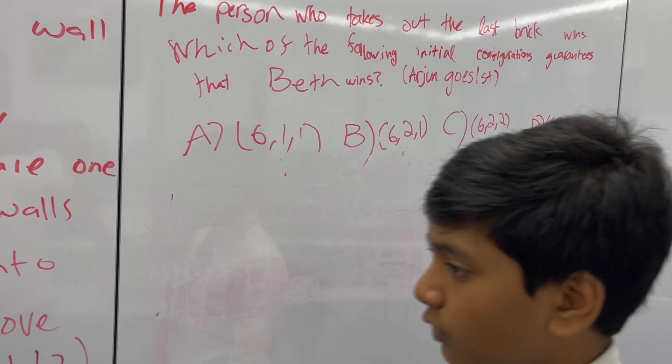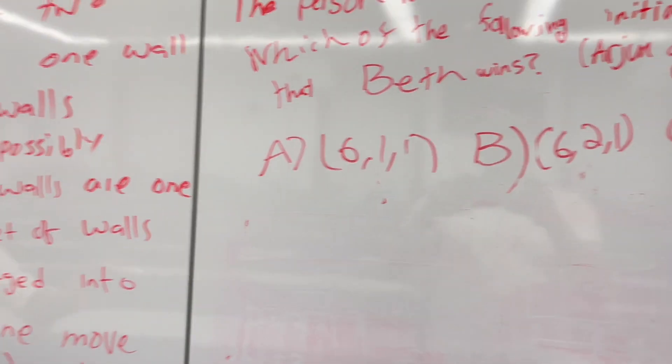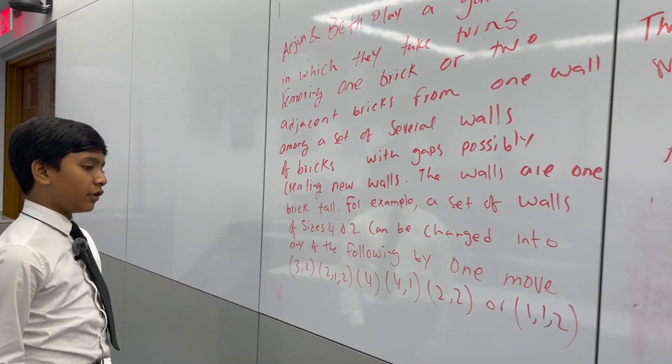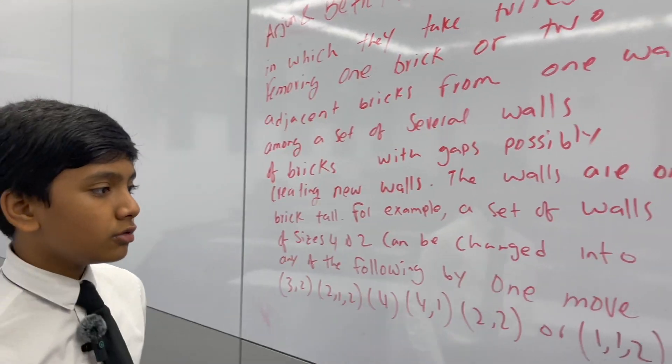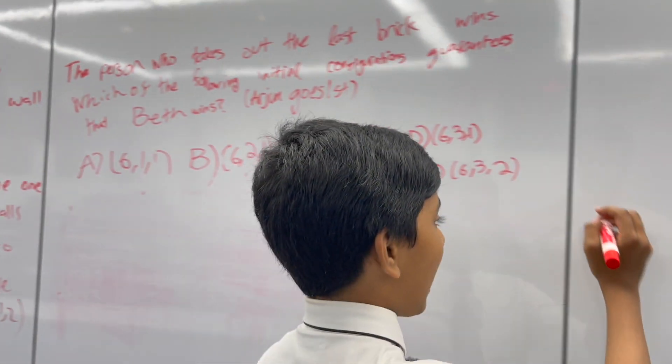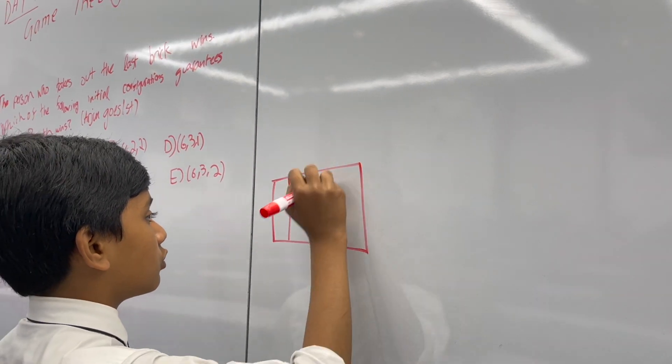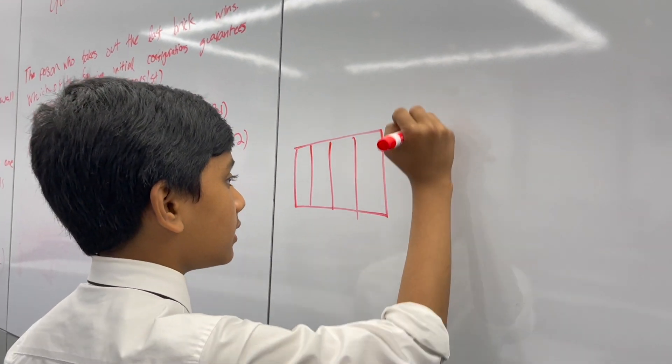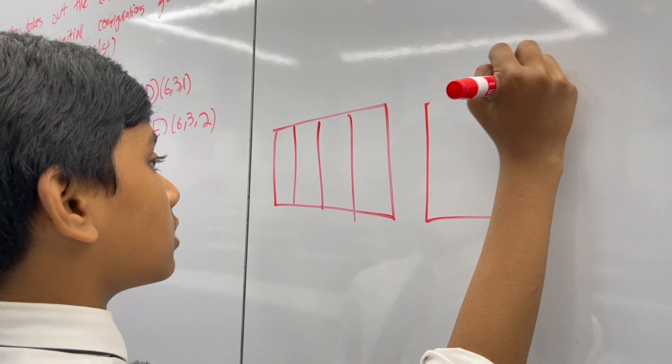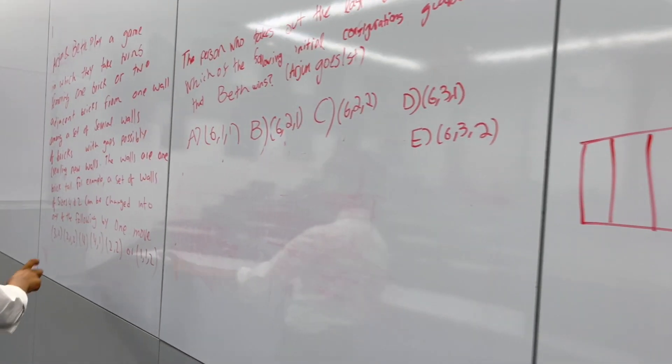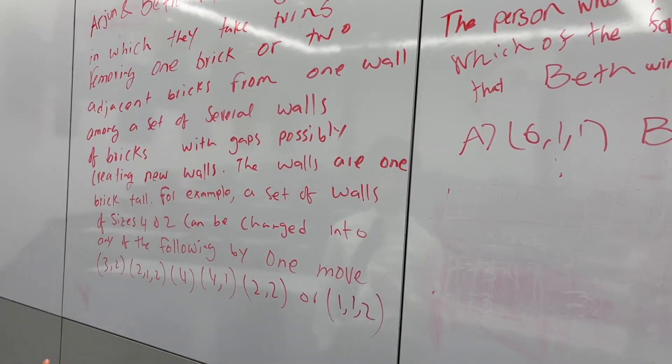Let's explain what they mean over here. Sizes 4 and 2 can be changed to any of the following by one move. What they mean is if we have a brick wall that looks like this: 1, 2, 3, this is 4 bricks. And then this is 2 bricks, so the comma is meant to represent a gap. Here's the gap.